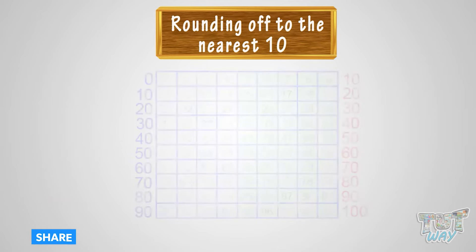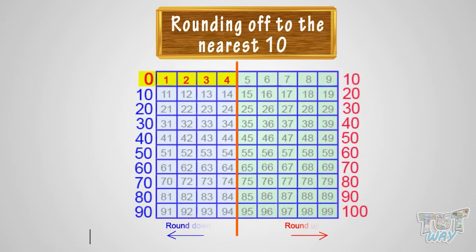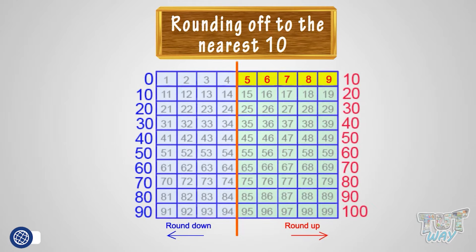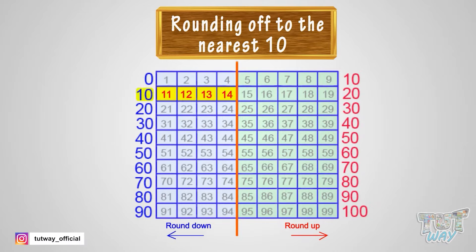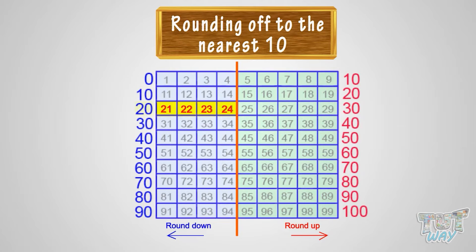See the figure. The numbers 0 to 4 are rounded down to 0, and 5 to 9 are rounded up to 10. Likewise, 11 to 14 are rounded down to 10, and 15 to 19 are rounded up to 20. Numbers 21 to 24 are rounded down to 20, and numbers 25 to 29 are rounded up to 30.